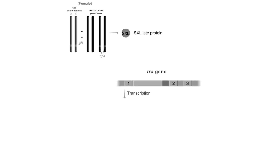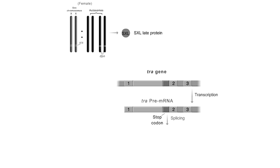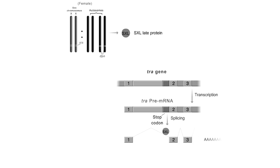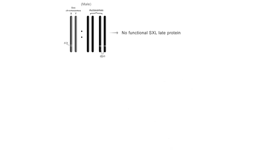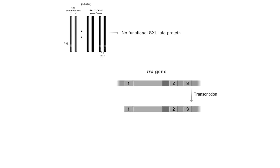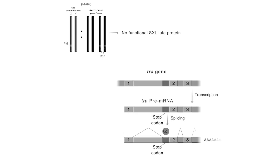In the female embryo, SXL late protein regulates splicing of the transformer, or TRA, pre-mRNA. The stop codon-containing segment upstream of and contiguous with exon 2 is removed, resulting in a mature mRNA with exons 1, 2, and 3. Translation of this mRNA produces the active transformer, or TRA-1, protein. In males, default splicing of the TRA pre-mRNA occurs due to the absence of SXL late protein; the stop codon-containing exon is not removed, so no functional TRA protein is produced.